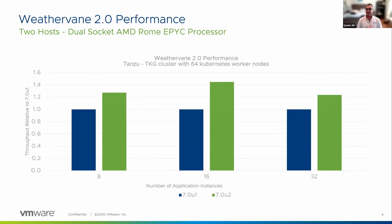The last data point is Weatherwind 2.0, an open-source benchmark that simulates a multi-tier web application with both stateless and stateful services. These services are run in different application instances, which are scheduled on VMs. Interestingly, it runs on a Kubernetes cluster. We used vSphere with Tanzu to configure this Kubernetes cluster on a two-host system using vSAN on a dual-socket AMD Rome system, with 64 Kubernetes worker nodes deployed over two hosts — 32 per host — each sized at 4 vCPU and 32 GB.